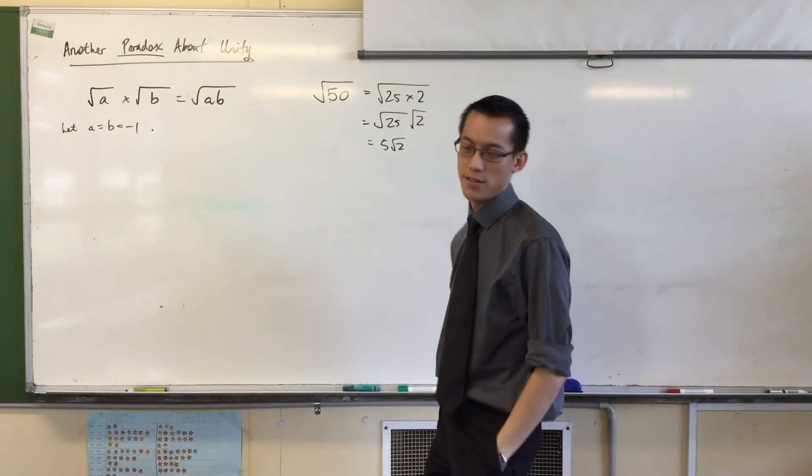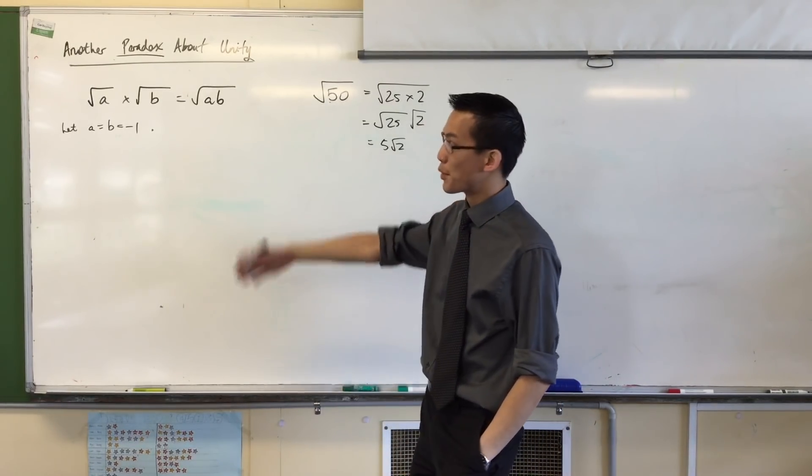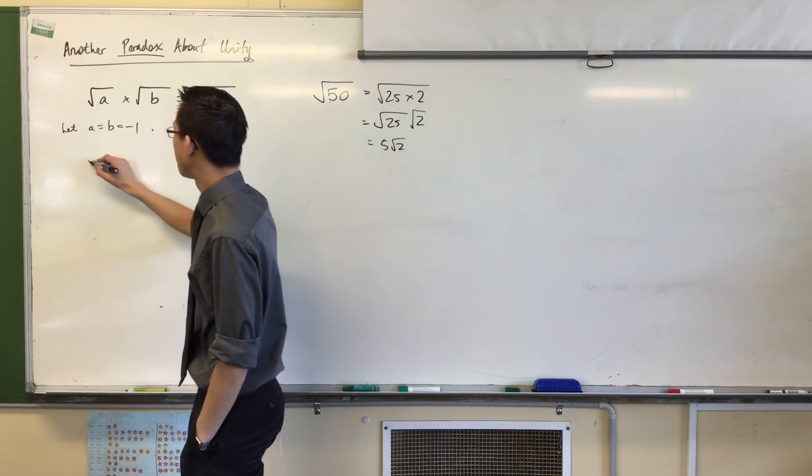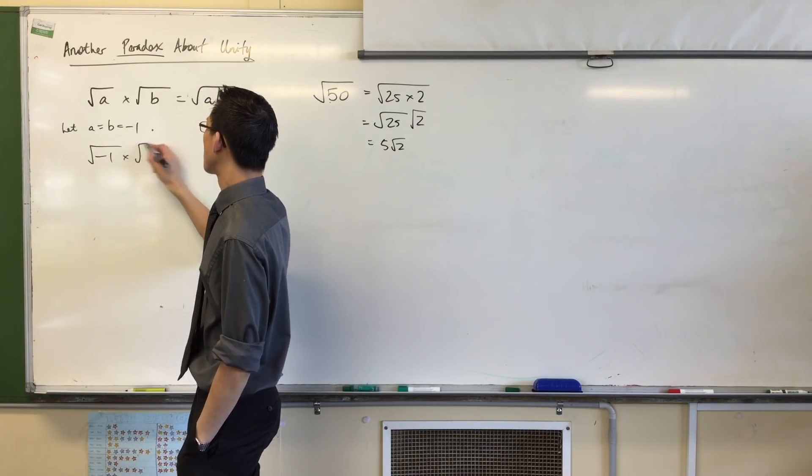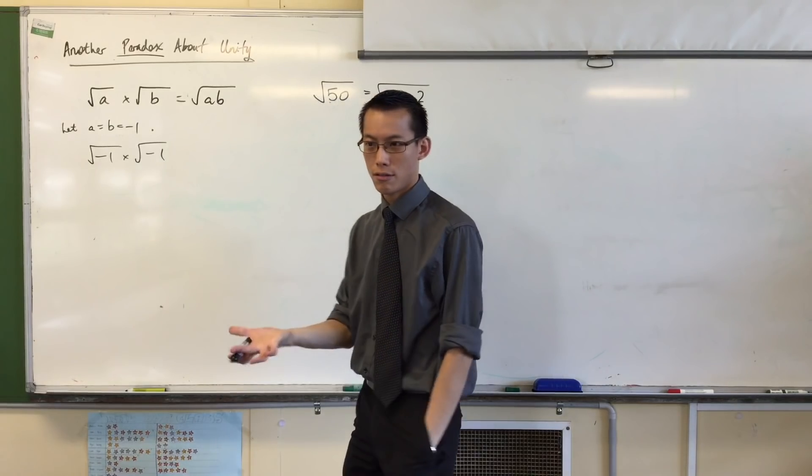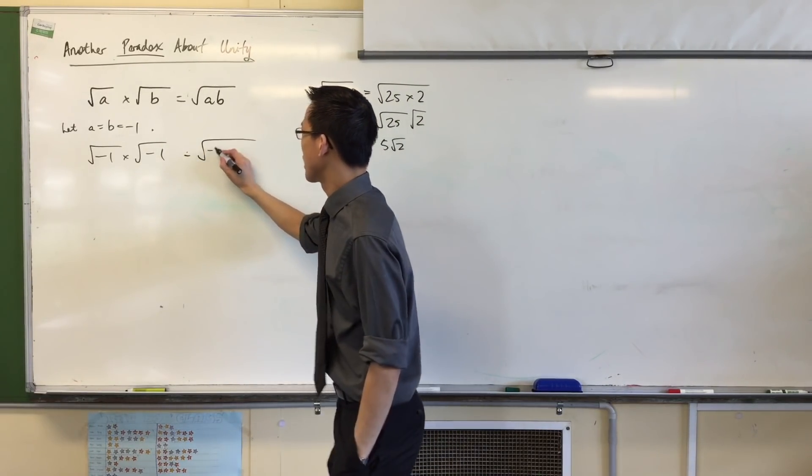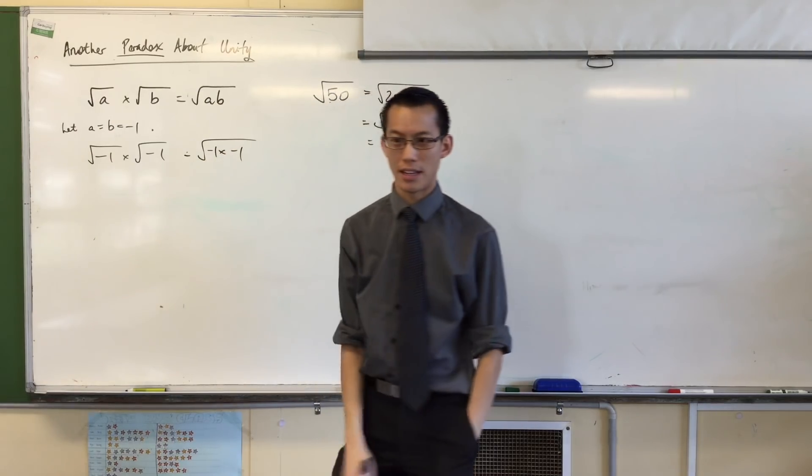Now, I could actually choose a variety of different values here that would still bring out this paradox, but let's just try it anyway. So what I get on the left-hand side is √(-1) × √(-1). So far, so good? What am I going to get on the right-hand side? I'm going to get √(-1 × -1).